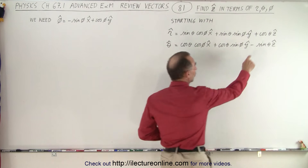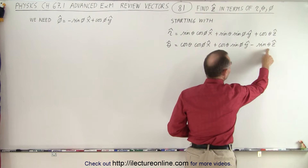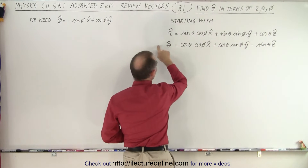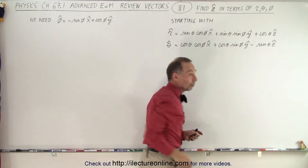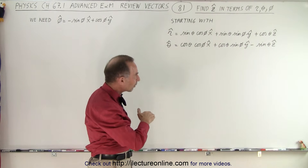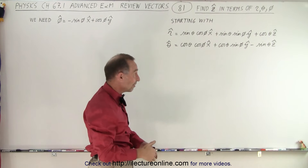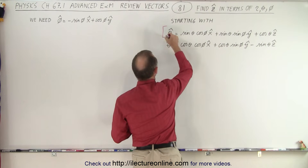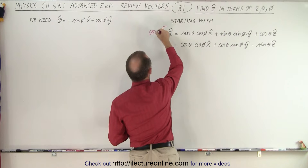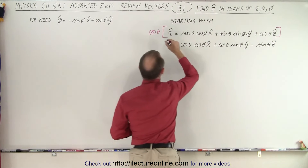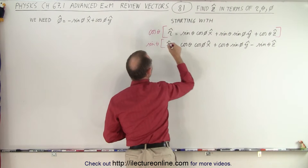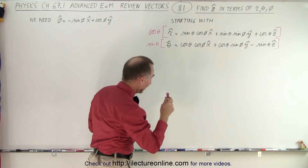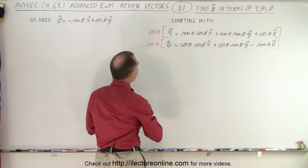Notice on the right side we have the cosine of theta z unit vector minus the sine of theta z unit vector. So if we multiply the top equation by the cosine of theta and the bottom equation by the sine of theta and then subtract the two equations, we end up with the cosine squared of theta plus the sine squared of theta times the z unit vector, which is basically one times the z unit vector. So let's go ahead and multiply the top equation by the cosine of theta and the bottom equation by the sine of theta, then subtract one from the other — the second equation from the first — and that will give us the z unit vector by itself.